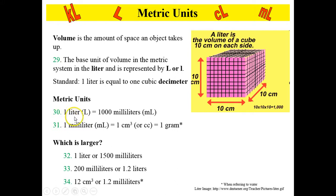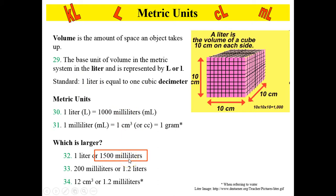For number 30, it's important to know that one liter equals 1,000 milliliters. If we looked at each of these blocks as a milliliter, there would be 1,000 blocks in this cube. Number 31: 1 milliliter equals 1 centimeter cubed when measuring solid volume (length times width times height), or 1 gram when referring to water. Number 32: which is larger, 1 liter or 1,500 milliliters? If 1 liter equals 1,000 milliliters, then 1,500 milliliters is larger.